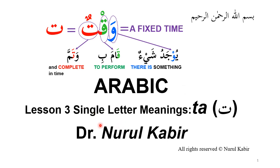This is lesson 3 of the single-letter meanings series, and in this lesson I'll be talking about the meaning of the letter Ta. One of the meanings of the letter Ta is a fixed time. These three letters you can think of as yu-ja-du-sha-yun: one meaning of 'y' is something exists, 'b' means to perform, and this means to complete something. So 'waqt' has a built-in meaning of a fixed time in which something is performed and completed.